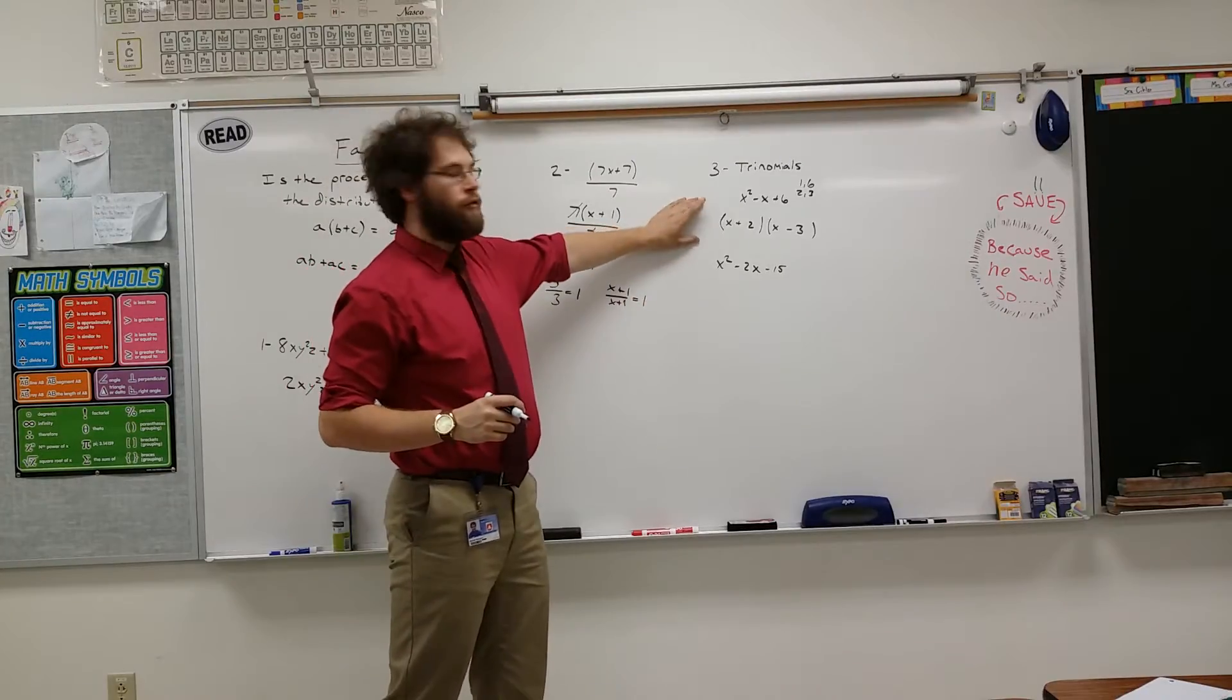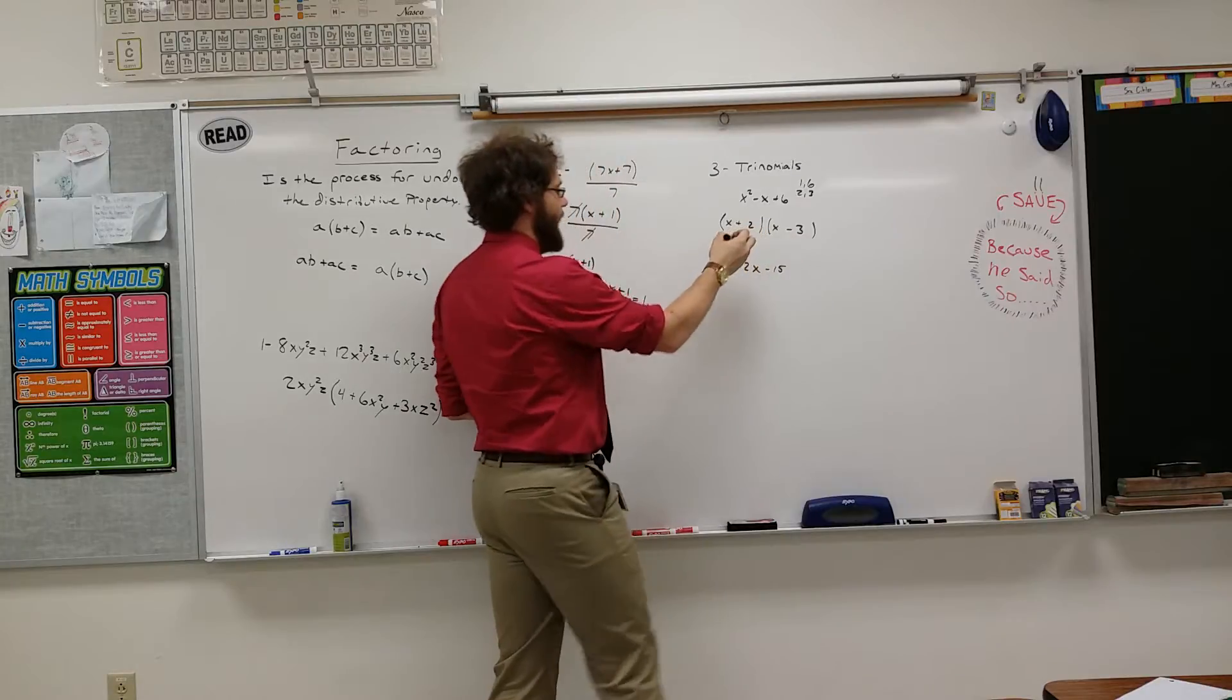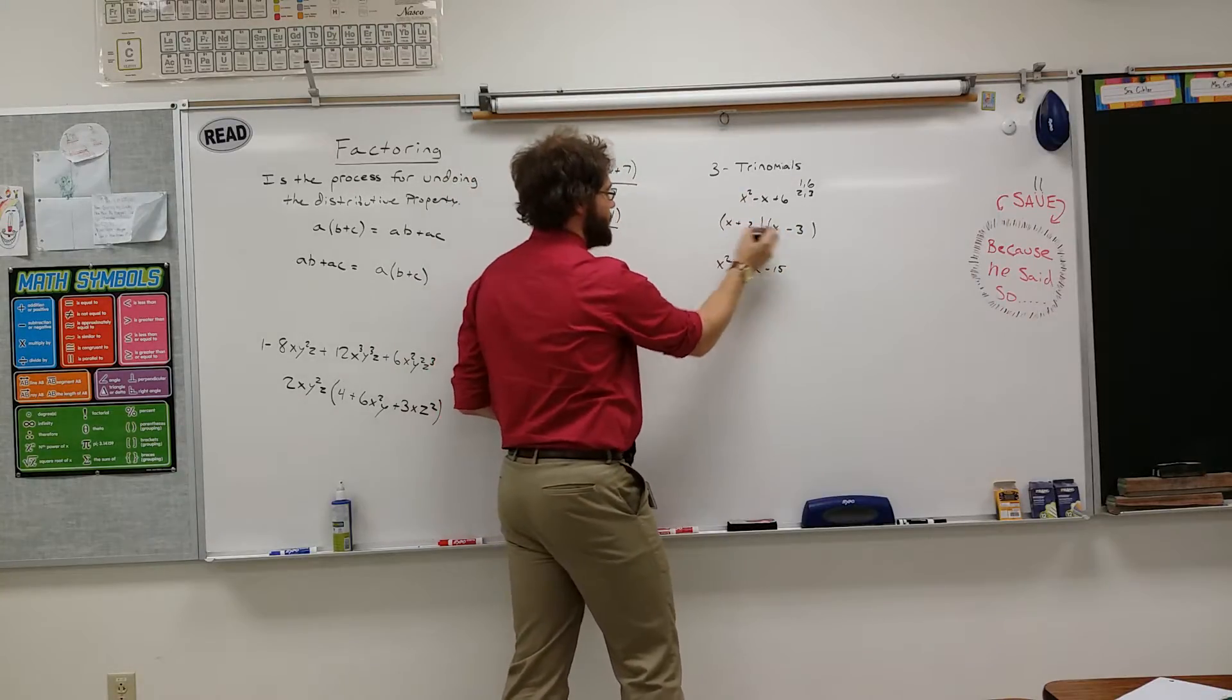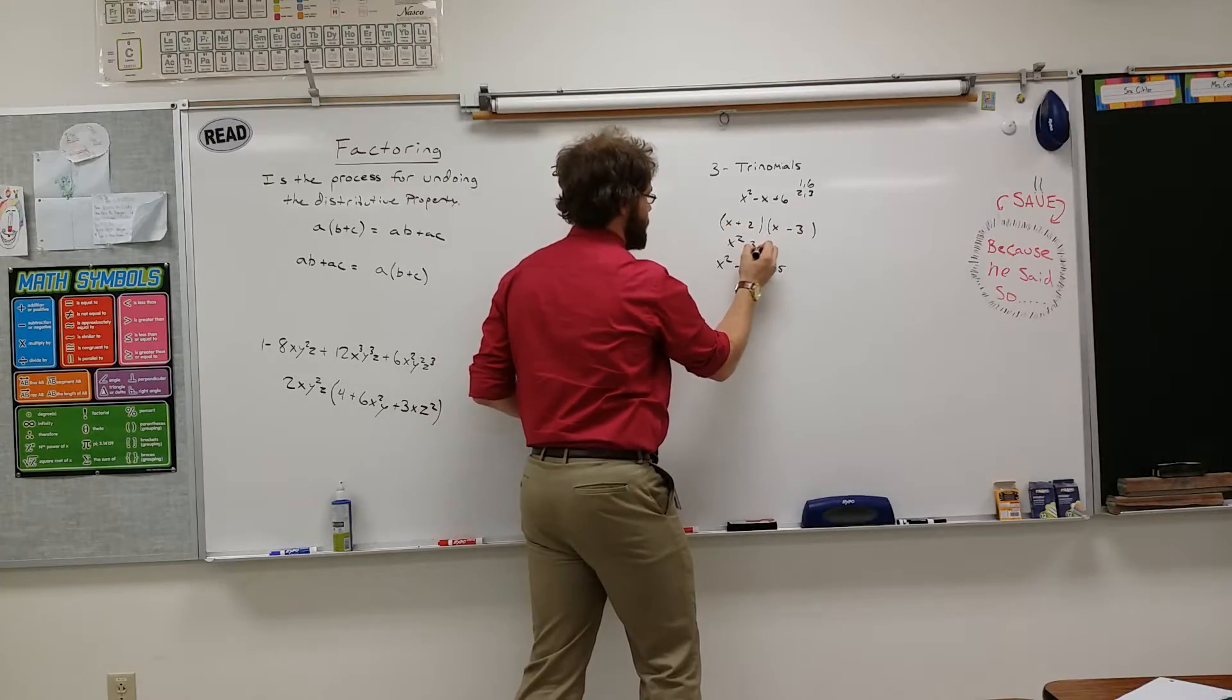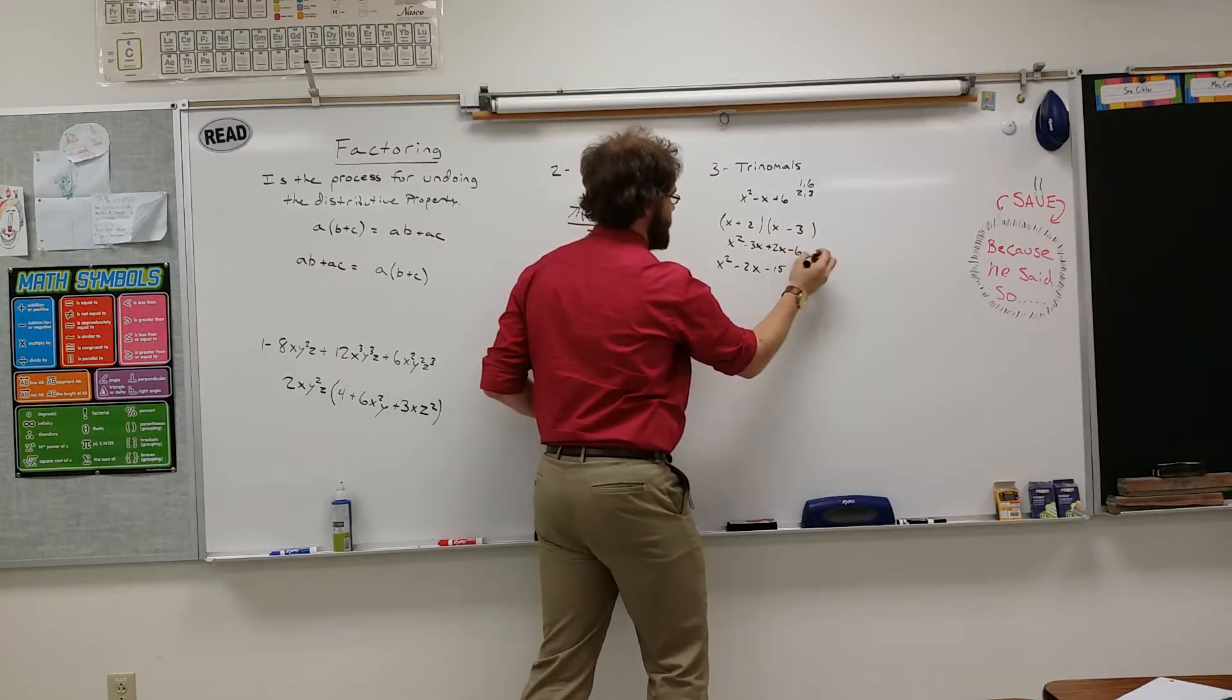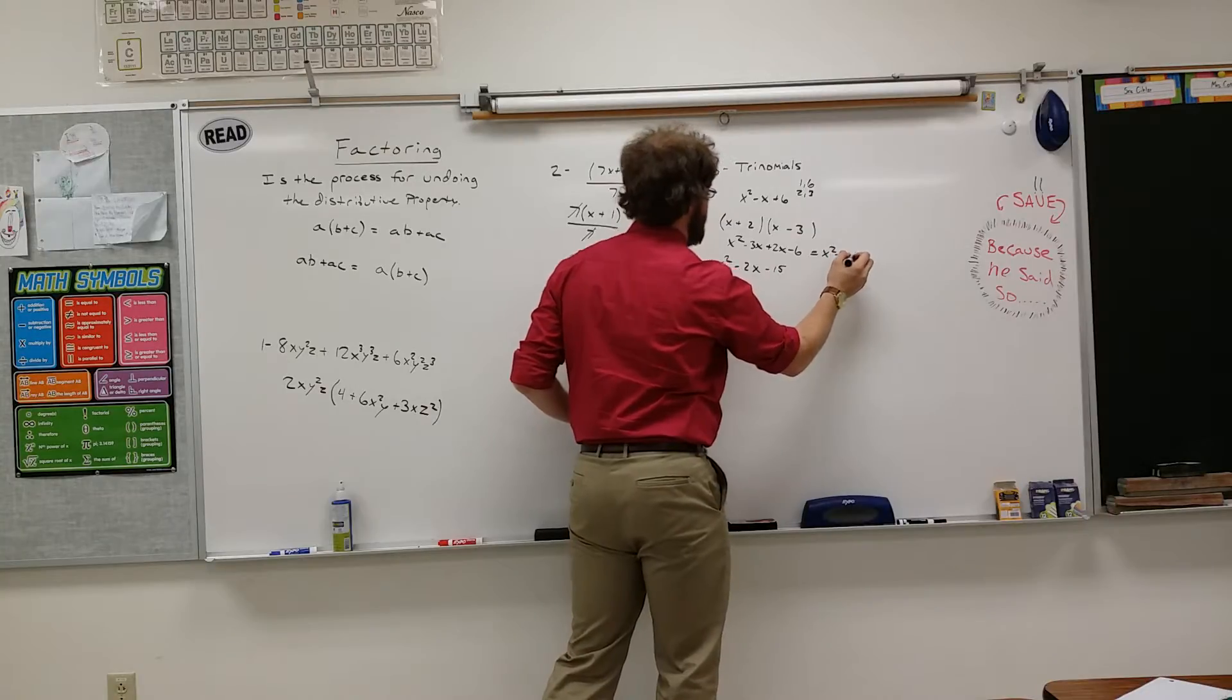You can check yourself by foiling. If you foil, you're going to first, outside, inside, last these factors and see if you get it back. So, X times X is X squared. X times negative 3 is negative 3X. 2 times X is 2X. 2 times negative 3 is negative 6.